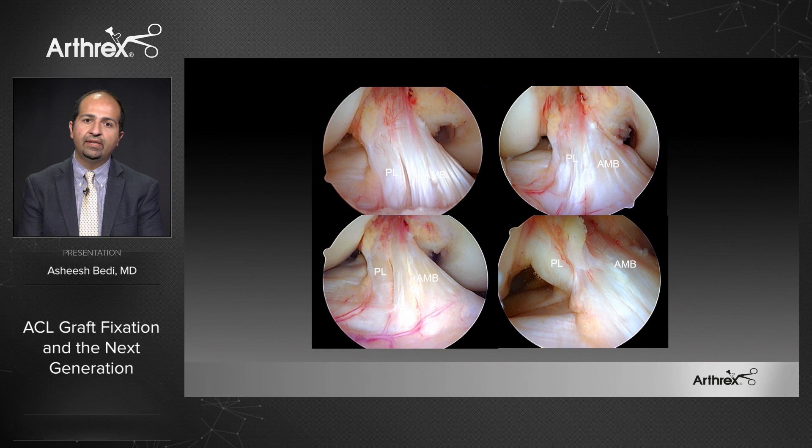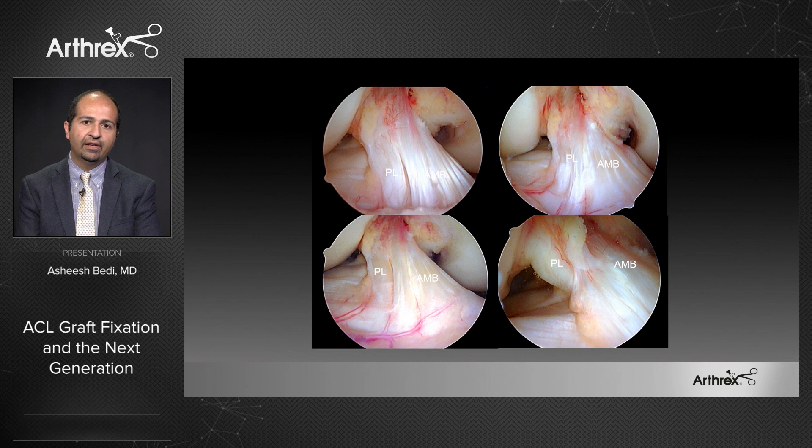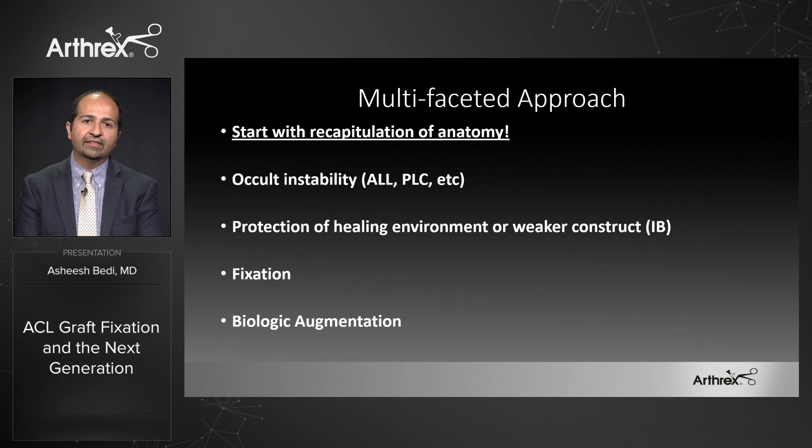When we do ACL reconstructions or even scope knees in general, you can appreciate this anatomy. We've talked about posterolateral and anteromedial bundles, but perhaps the most important principle is that we have a continuity of collagen fibers extending across a broad footprint, with variable tension throughout the functional range of motion of the knee.